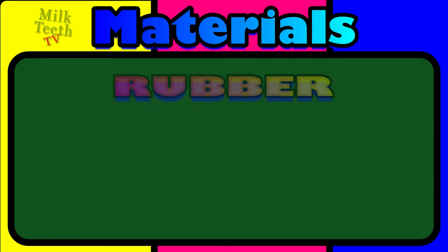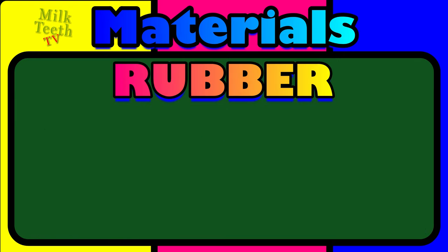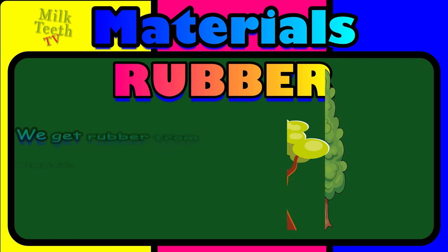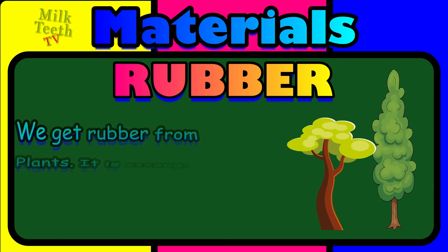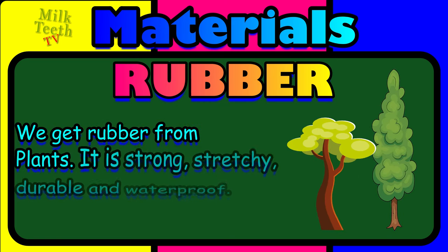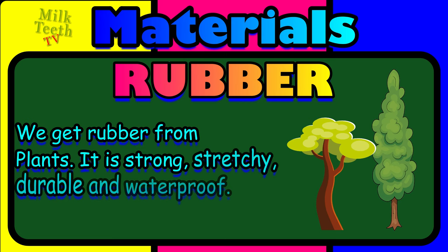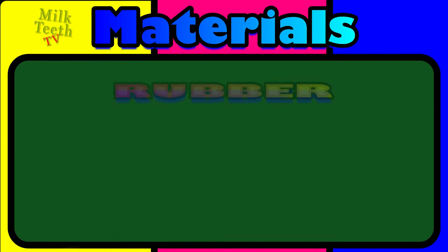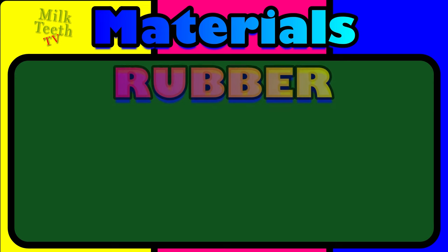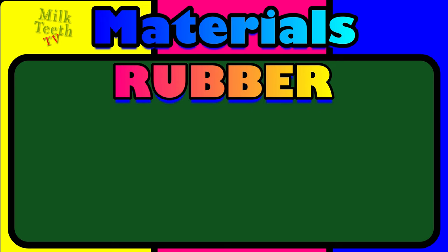The fourth important material used in our everyday lives is rubber. We get rubber from trees and plants. It is strong, stretchy, durable, and most importantly, it is waterproof. Now can you name a few things made out of rubber around you?